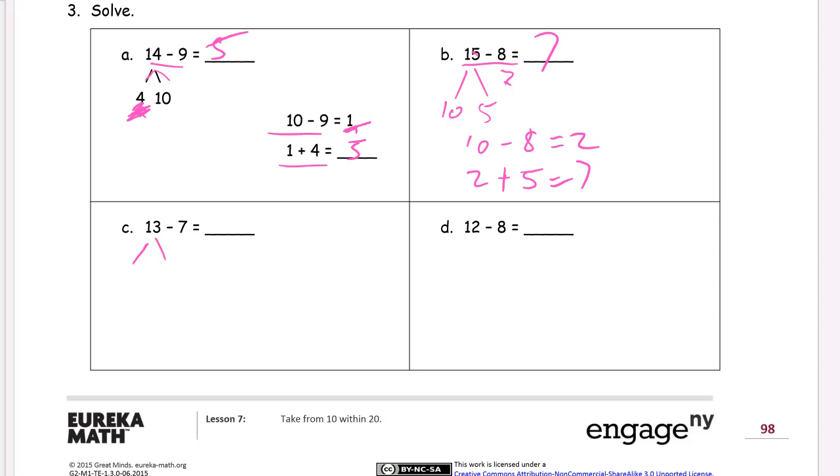13 minus 7, that's 10 and 3. 10 minus 7 is 3. And we've got a double here. 6. And 12 is 10 and 2. So we're going to have another double. You might see it already. 10 minus 8 equals 2. And this 2 plus that 2 equals 4. That's 4.